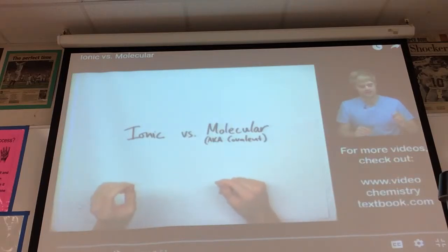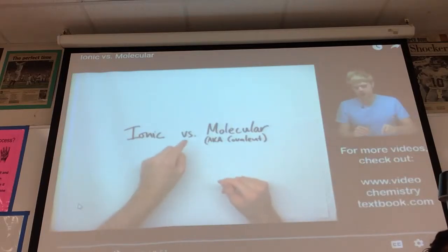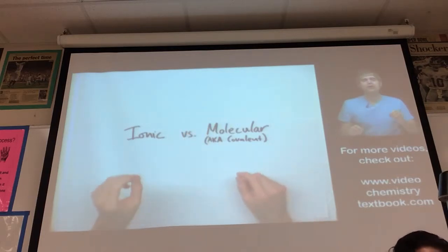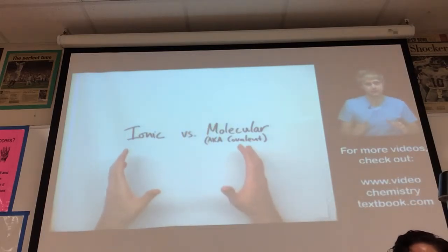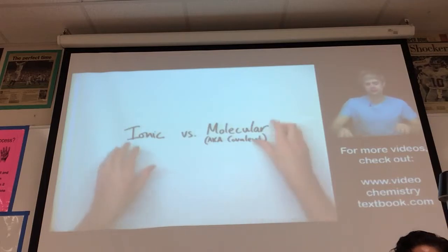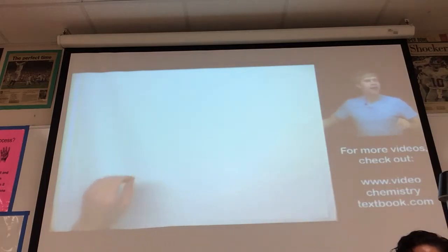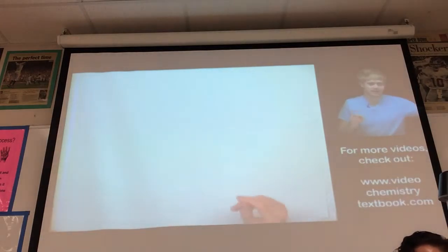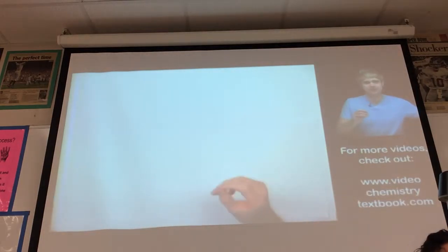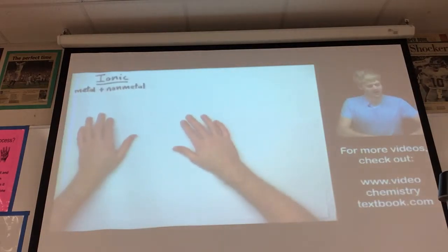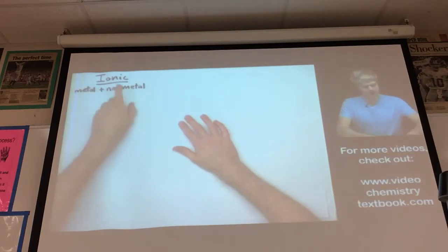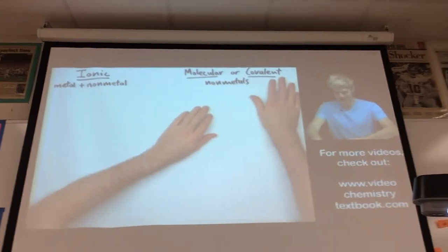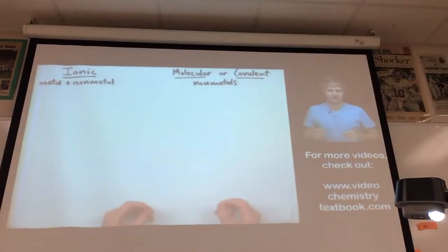In this video, we're going to look at compounds that are ionic versus compounds that are molecular, also known as covalent. We'll learn how you can tell them apart based on the components, and then we'll look at some important differences between them. Ionic compounds are made of metals and non-metals, whereas molecular, also known as covalent compounds, are made of only non-metals.